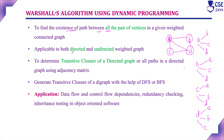Warshall's algorithm is applicable to both directed and undirected graphs. A directed graph is a graph pointing with arrows — with direction. That is, from A to B there is a path, but B to A there is no path. It is applicable to both directed and undirected weighted graphs.